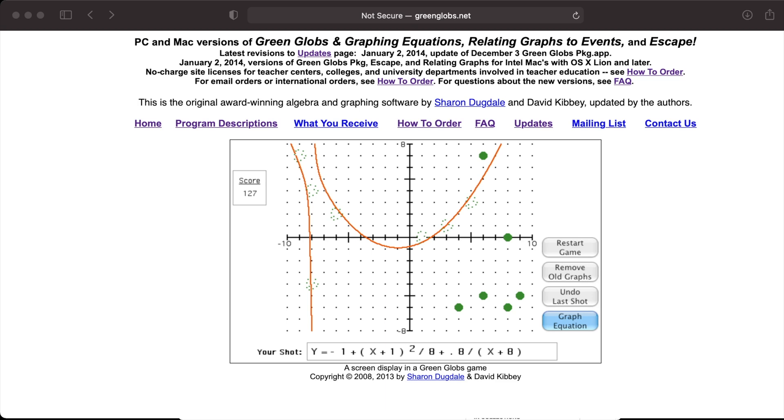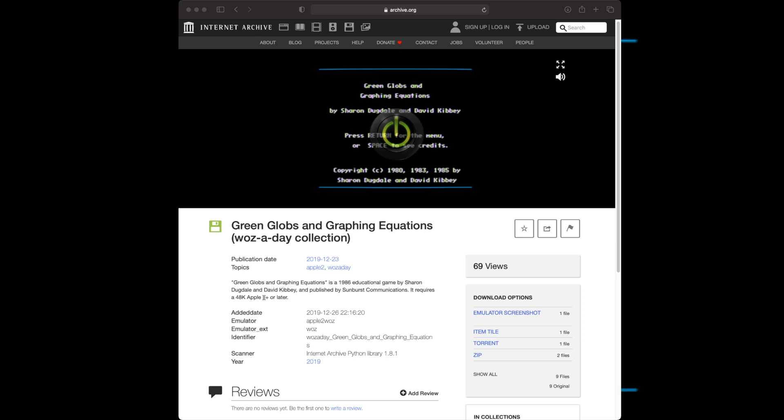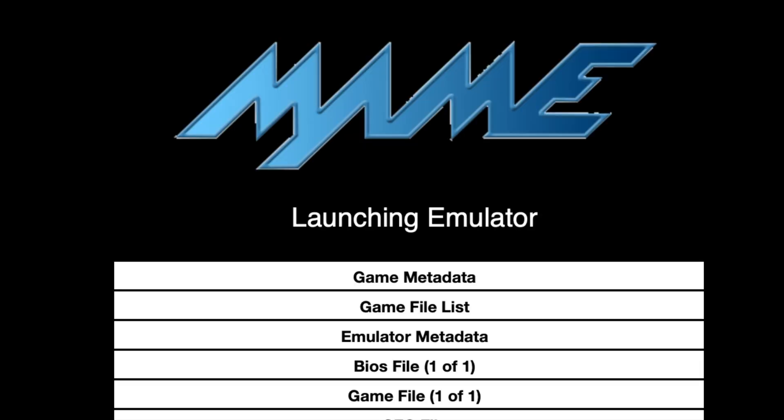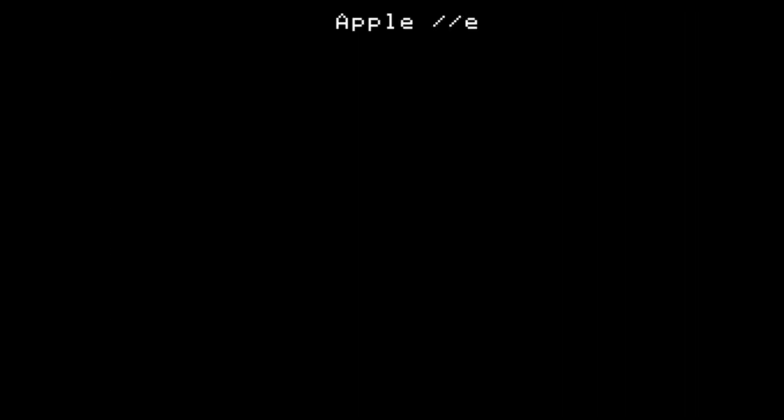But what I really want to show you today is the oldest version of this software that I'm aware of for the Apple II. We'll find it on the Internet Archive. Let's take a look. Thanks to the Internet Archive's in-browser emulator, we can try it right in our web browser.